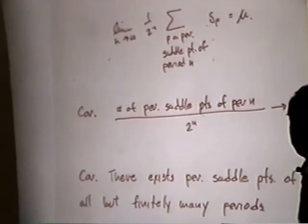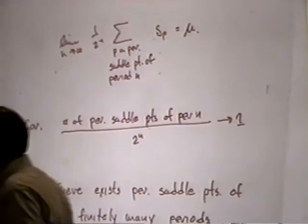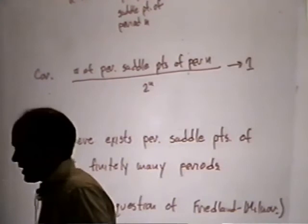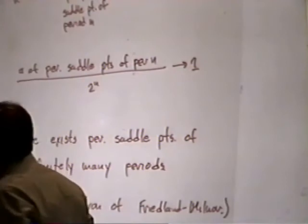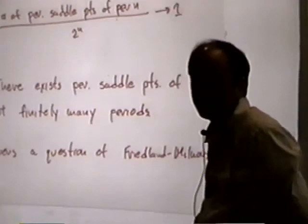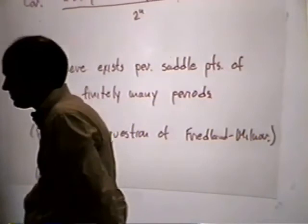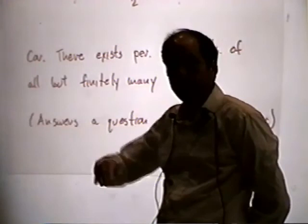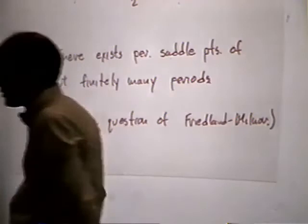One of the corollaries of this result: if we consider the total mass of both sides of the equation, mu is a probability measure with total mass one. On the left-hand side, the total mass is just the number of periodic saddle points divided by this factor one over two to the N. So we see that the number of periodic saddle points of period N divided by two to the N converges to one — a very strong statement about the behavior of these periodic points. The fact that it's no larger than two to the N is an algebraic fact from Bezout's theorem, but the fact that it's as large as that is a deep and significant dynamical fact.